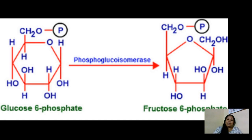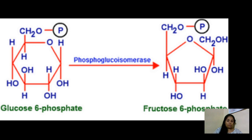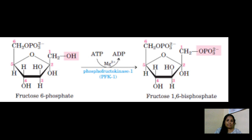The second reaction is isomerization. In this step, glucose-6-phosphate is isomerized to fructose-6-phosphate. This reaction is catalyzed by the enzyme phosphoglucose isomerase.